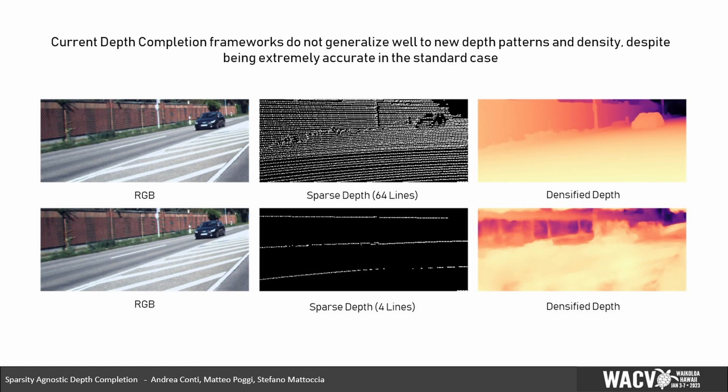To cope with this sparsity, many techniques mostly relying on deep learning have been proposed in literature. However, even if really effective in the standard use case, they cannot deal with large variations in the input spatial distribution. Moreover, this behavior also prevents their seamless deployment when using a depth sensor with a pattern different from the one used while training, such as switching from an expensive Velodyne LiDAR sensor to a cheaper one, usually sparser.